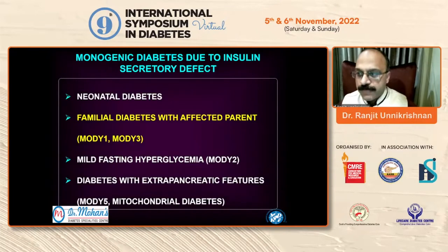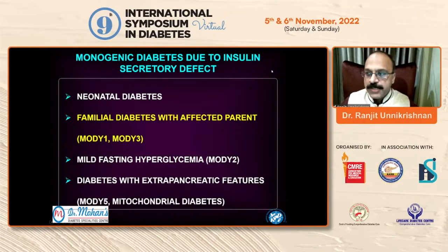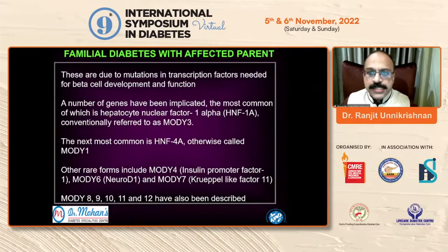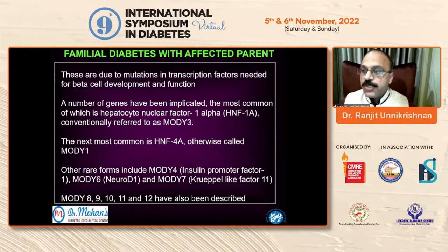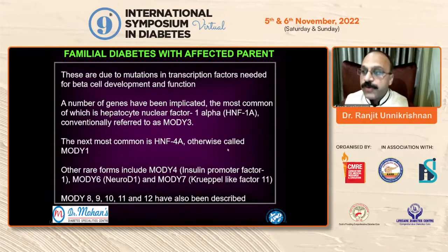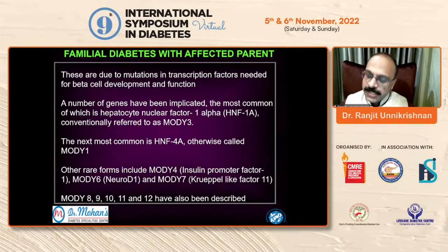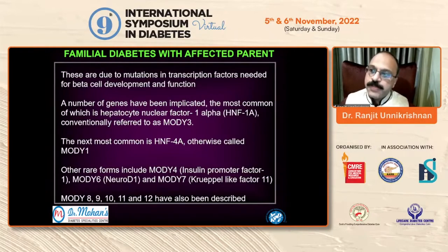The second phenotype is familial diabetes with an affected parent, formerly called MODY 1 and MODY 3. These are due to defects in transcription factors needed for normal development and functioning of the beta cell, so the diabetes caused by these defects is progressive. They are generally normal at birth and develop diabetes during adolescence or young adulthood. The two most common genes implicated are HNF1-alpha (hepatocyte nuclear factor 1-alpha) and HNF4-alpha, referred to as MODY-3 and MODY-1 respectively. They constitute around 1–2% of all diabetes cases in the UK, and up to 5–6% of young-onset diabetes cases.